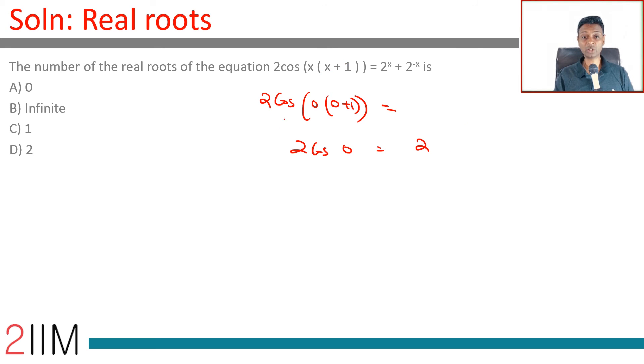this will be 1 even when x is minus 1. But in x is minus 1, this part would not be equal to 2. 2 cos minus 1 into minus 1 plus 1 is also 2. That is fine. But 2 power minus 1 plus 2 power minus of minus 1 is 5 by 2, not 2.